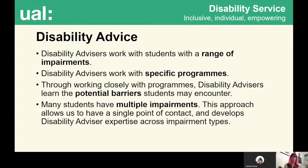The potential barriers on an illustration course are going to be quite different from those on a filmmaking or journalism course. This allows us to build up relationships with specific programmes and the staff within those programmes, to understand more about course delivery, anticipate barriers, and adapt our advice and recommendations accordingly. Another advantage of working with programmes rather than specific impairment groups is that many students have multiple impairments, so this approach allows all students to have a single point of contact — the same contact as their friend in the same class. It also allows disability advisors to develop expertise across impairment types.